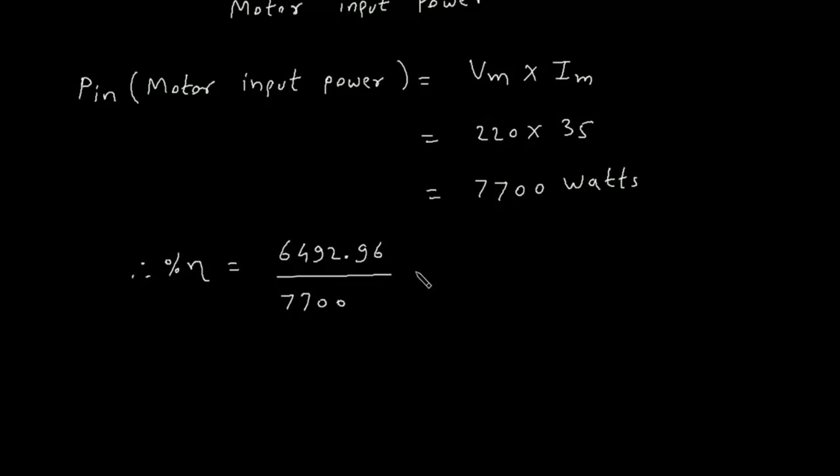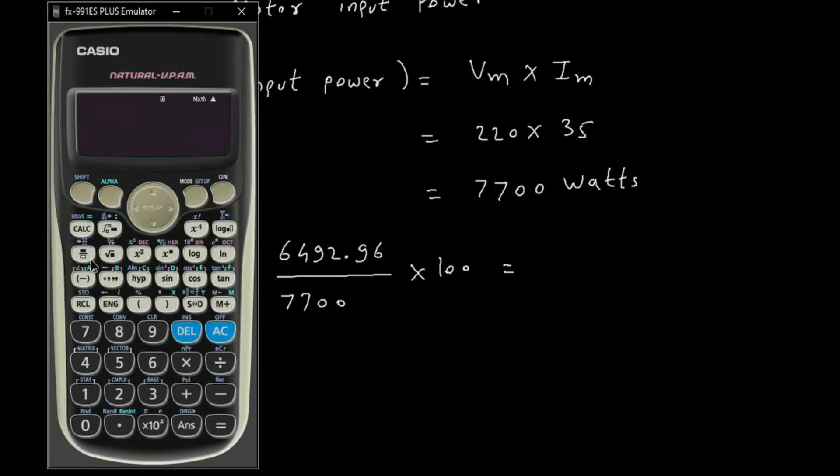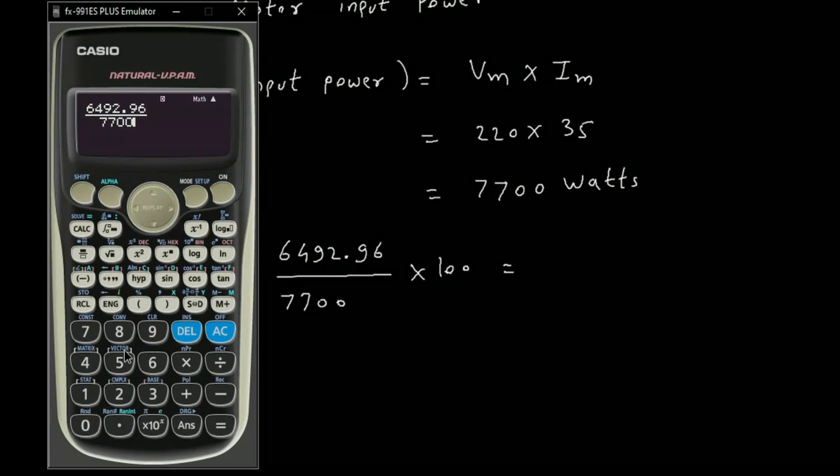This will be 6492.96 divided by 7700, which equals 84.32%.